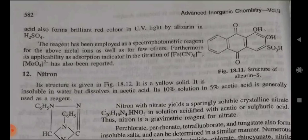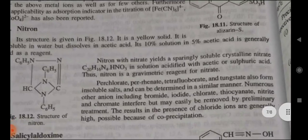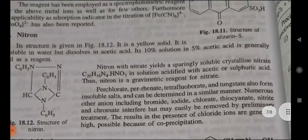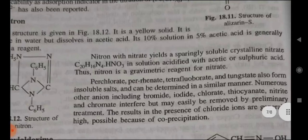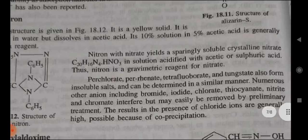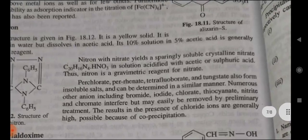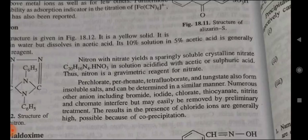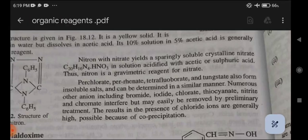Twelfth — Nitron: its structure is given in figure 18.12. It is a yellow solid, insoluble in water but dissolved in acetic acid. A 10% solution in 5% acetic acid is generally used as a reagent. Nitron yields precipitates with soluble nitrates, with the formula C20H16N4·HNO3, in solution acidified with acetic or sulfuric acid. Thus nitron is a gravimetric reagent for nitrate. Perchlorate, perrhenate, tetrafluoroborate, and tungstate also form insoluble salts and can be determined in a similar manner. Numerous other anions including bromide, iodate, chlorate, thiocyanate, nitrate, and chromate interfere but may easily be removed by preliminary treatment. Results in the presence of chloride ions are generally high due to co-precipitation.